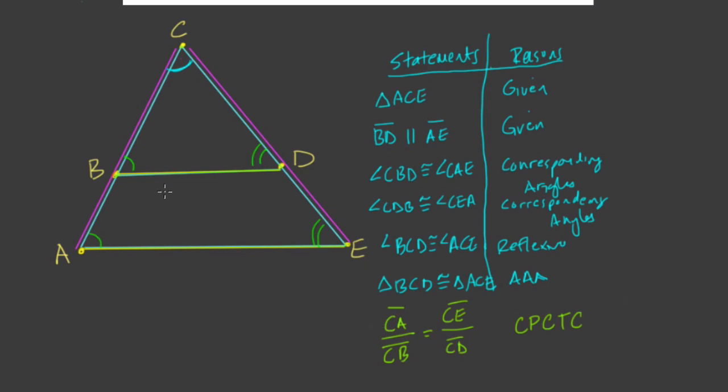The side splitter theorem, what it says, is not the ratio of the longer side, or excuse me, this side CA to CB is equal to CE to CD, but it says that the ratio of this piece right here, let me just color over it there, CB to BA, this chunk right here, is equal to the ratio of CD, this side, probably colored in there for you, to DE right here.